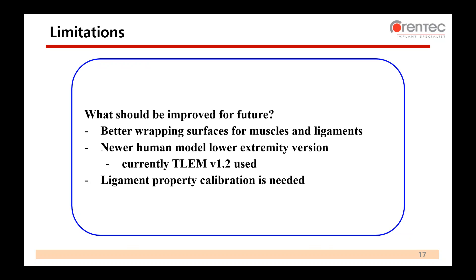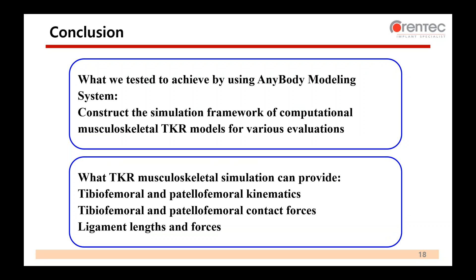Here are some limitations of our study. First, better wrapping surfaces for muscles and ligaments are needed. The current model was implemented using AMMR version 1.2, so it would be better if the latest version of the human lower body model were available. Ligament property calibration is also needed. In conclusion, we have completed the first step to construct a simulation framework of computational musculoskeletal TKR models for various evaluations using AnyBody Modeling System. From TKR musculoskeletal simulations, we could extract kinematics and dynamics for tibiofemoral and patellofemoral regions, as well as ligament lengths and forces during movement.